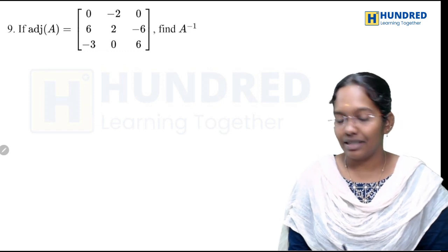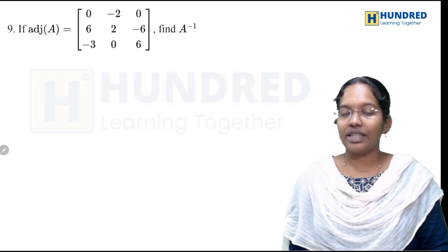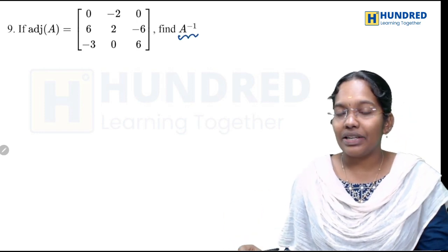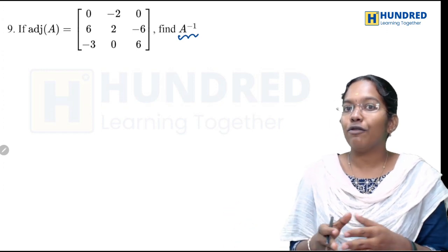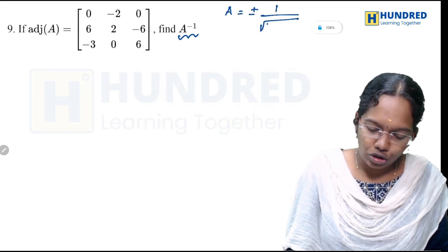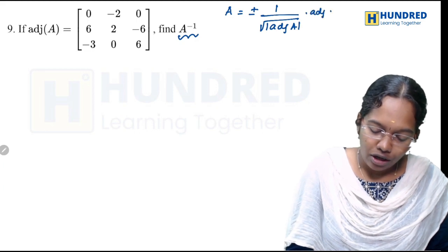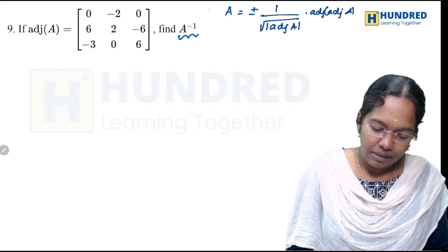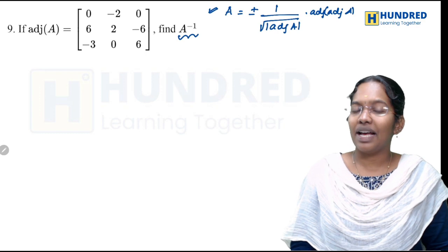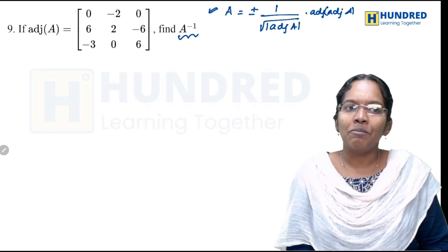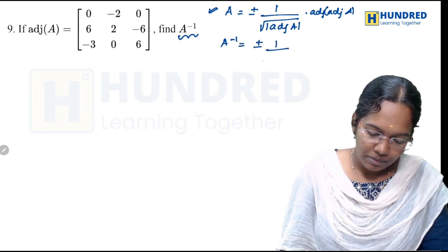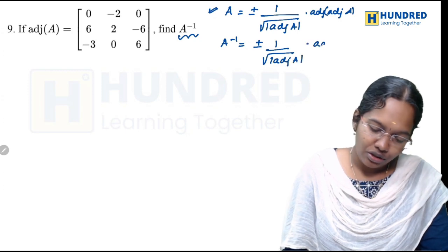Now we are moving to the 9th sum. Given the adjoint A matrix, we are going to find A inverse. The formula is: A inverse is equal to plus or minus 1 by root of determinant of adjoint A, into adjoint of adjoint A. That is the formula we are going to use when adjoint A is given.